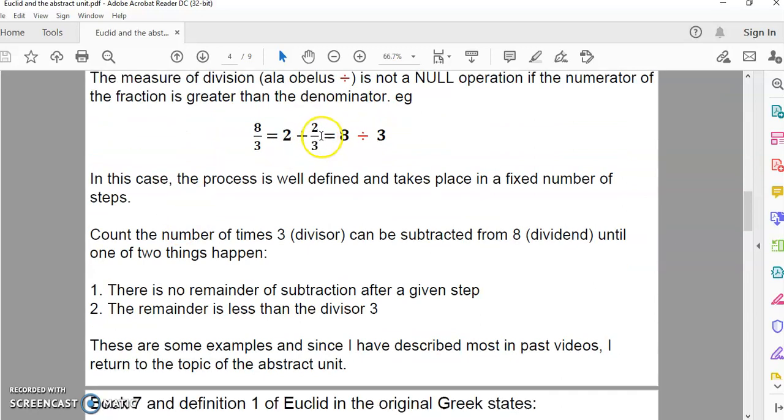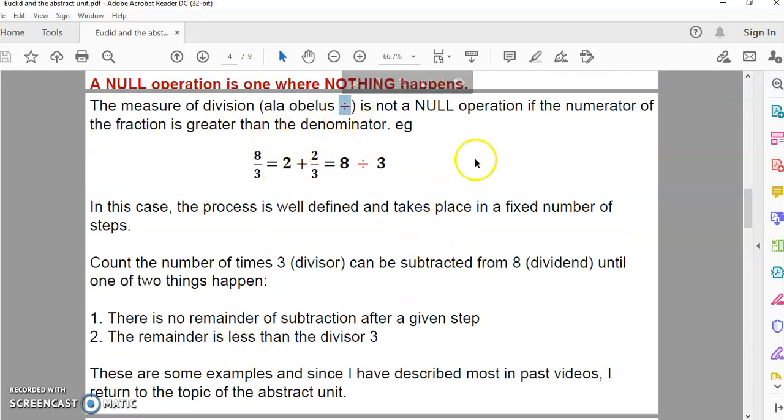The measure of division is not a null operation if the numerator is greater. For example, if we have eight thirds, we can do the obelisk operation. The process is well-defined and takes place in a fixed number of steps - there's no infinite subtraction. You count the number of times three can be subtracted from eight until one of two things happen: either there is no remainder after a given step, or the remainder is less than the divisor. The process doesn't go on infinitely.